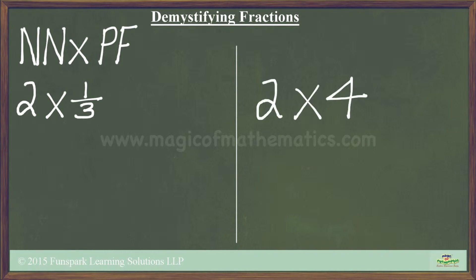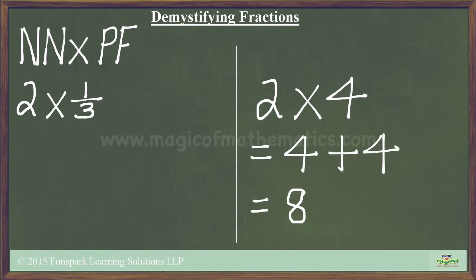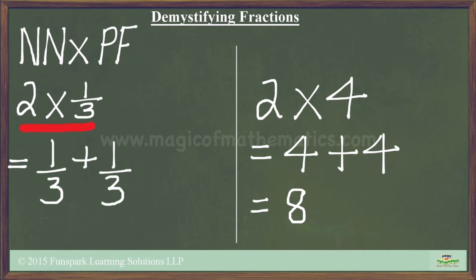For example, 2 times 4 would be 4 added to itself, which we know to be 8. If we extend this reasoning to the problem we are looking at, namely what is 2 times 1/3, we can say that 2 times 1/3 is nothing but 1/3 added to itself, which, if we know how to add two fractions, we know the answer would be 2/3.